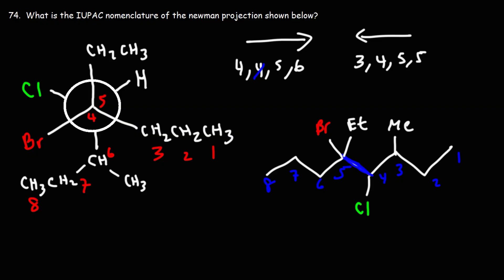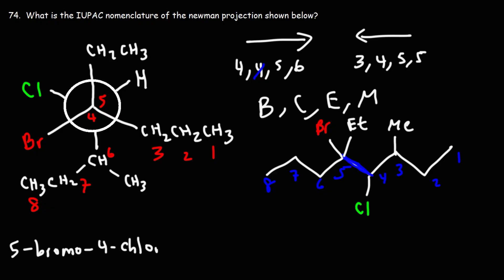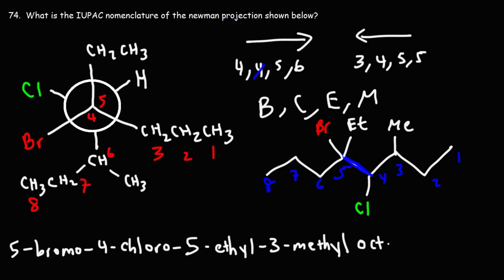Numbering right to left: one, two, three, four, five, six, seven, eight. We have a 3-methyl, 4-chloro, 5-bromo, and 5-ethyl substituent. Putting these in alphabetical order — B, then C, then E, then M — gives us: 5-bromo, 4-chloro, 5-ethyl, 3-methyl, octane. The full IUPAC name is 5-bromo-4-chloro-5-ethyl-3-methyloctane.